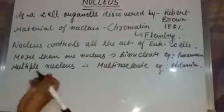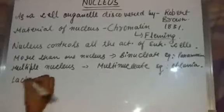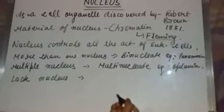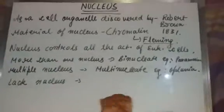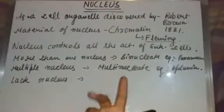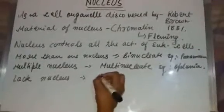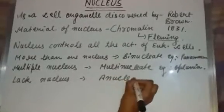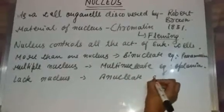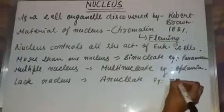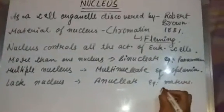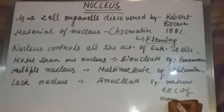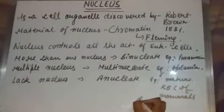There are also some cells which lack a nucleus entirely. These are called anucleate. Examples include mature red blood cells (RBC) of mammals and sieve tubes found in plants.